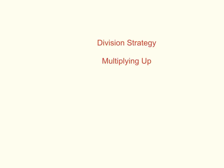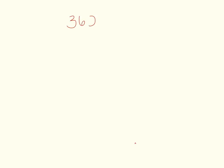We're going to look at another strategy called multiplying up, and this is where students use easy multiplication facts to multiply up to reach the dividend. Let's look at the problem 362 divided by 5. The goal is to multiply easy multiplication facts to help reach the dividend.